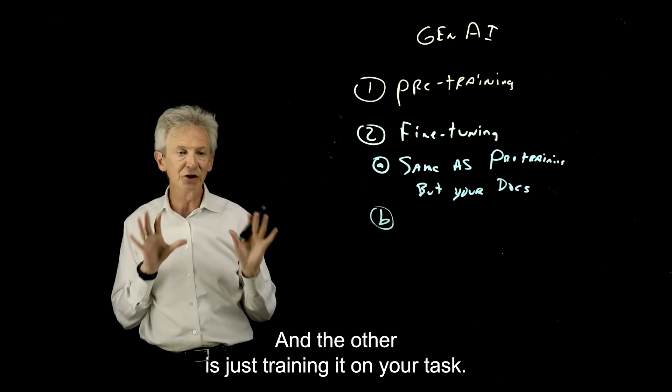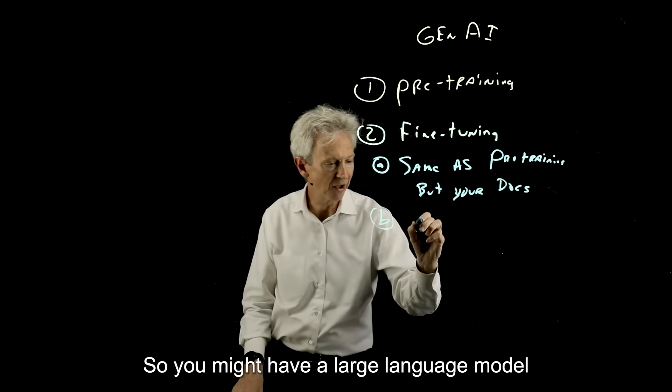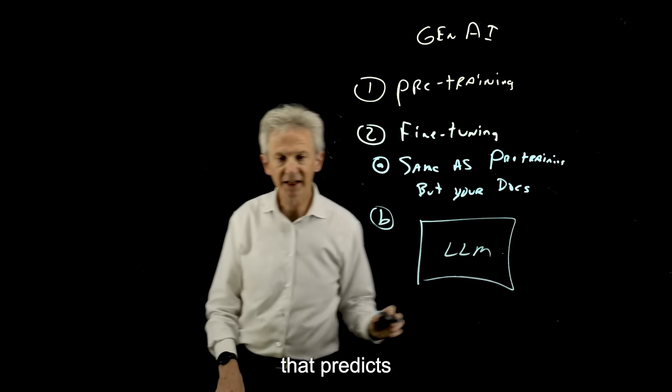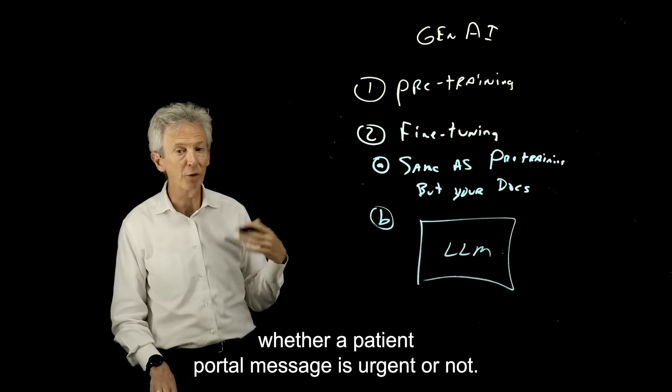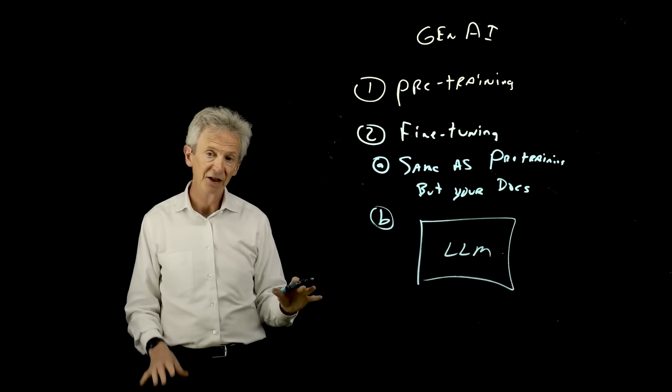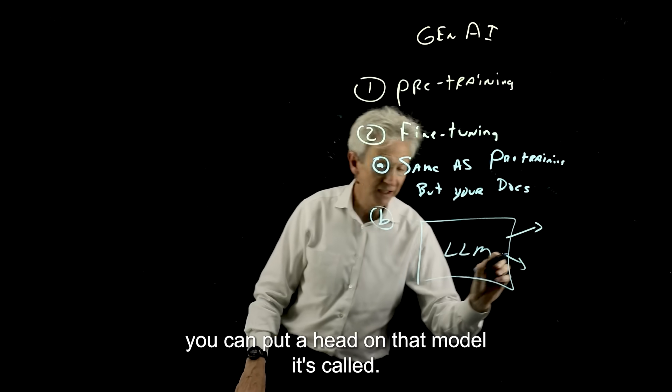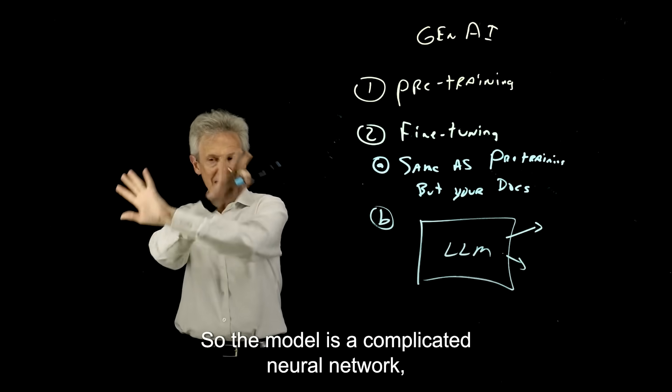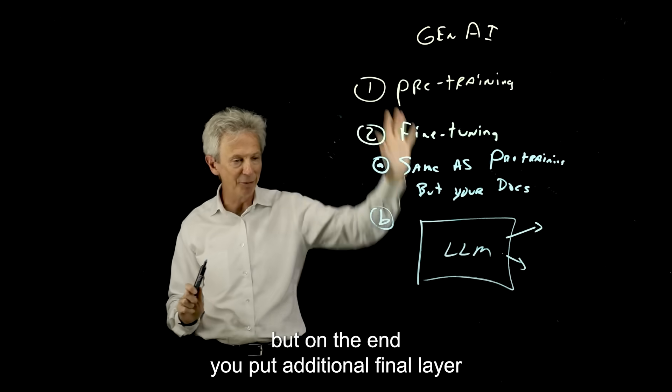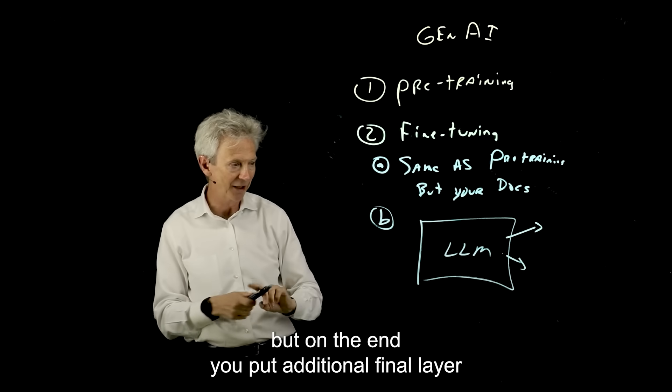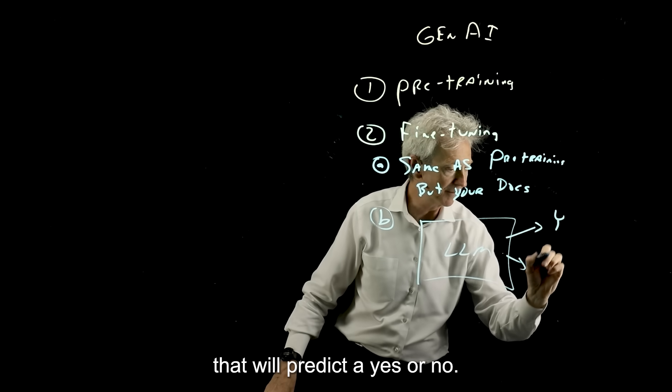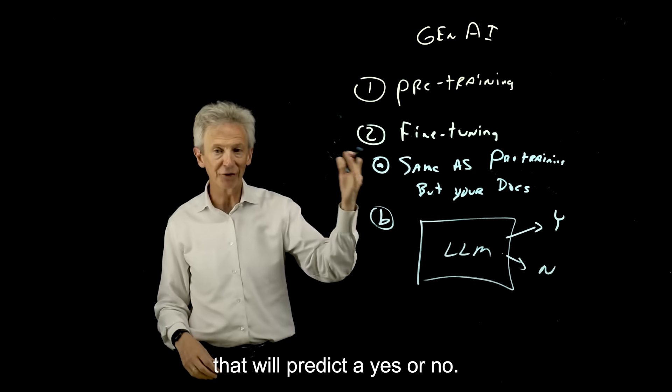And the other is just training it on your task. So you might have a large language model that predicts whether a patient portal message is urgent or not. So you can take that large language model, you can put a head on that model, it's called. So the model is a complicated neural network, but on the end, you put an additional final layer that will predict a yes or a no.